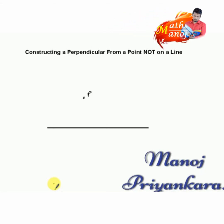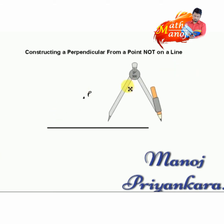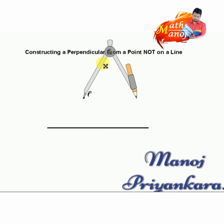Children, now we are going to study how to construct a perpendicular from a point not on a line — it means the point is an exterior point. I have marked a point as P that is outside the straight line. Now let's get the compass and keep the sharp point of the compass on P.